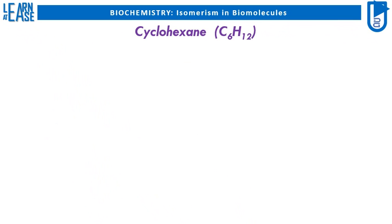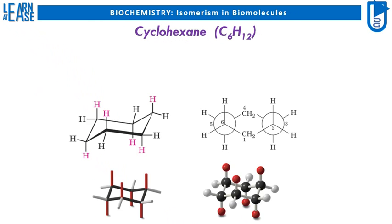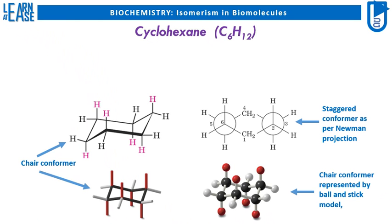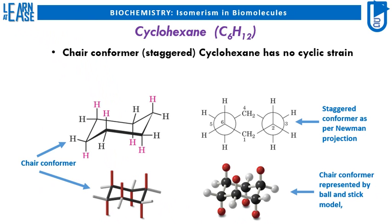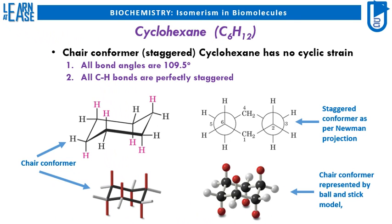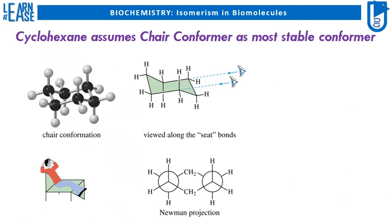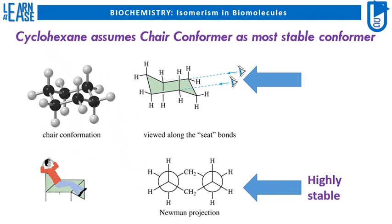Another molecule, cyclohexane, represented by the chemical formula C6H12, also shows several conformers. The staggered conformer of cyclohexane assumes a chair-like structure, so it is called the chair conformer. The chair conformer of cyclohexane has no cyclic strain, as all bond angles are 109.5 degrees and all C-H bonds are perfectly staggered. The chair conformer is the most stable conformer of cyclohexane.